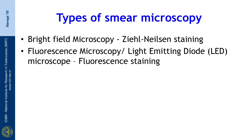There are 2 types of smear microscopy. One is the bright field microscopy using the Ziehl-Neelsen staining method. The next one is the fluorescent microscopy using the light emitting diode microscope with fluorescent staining.